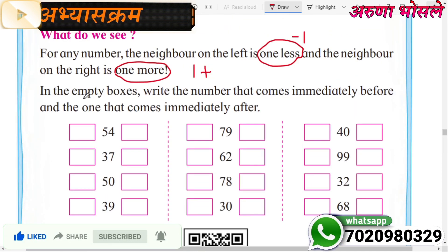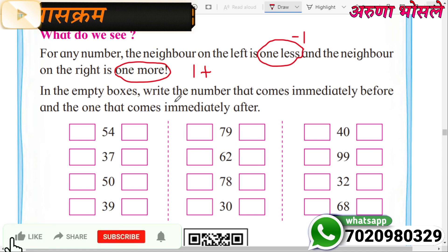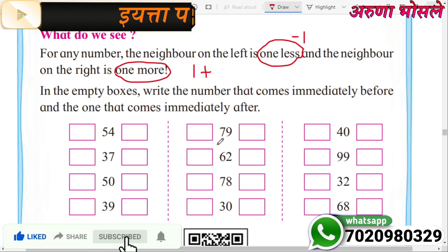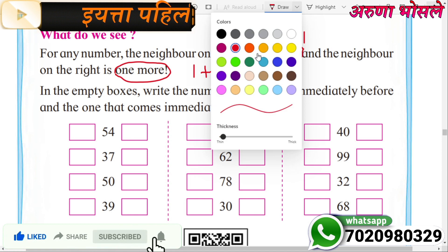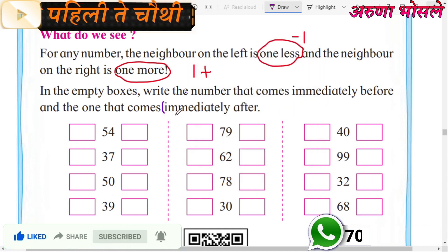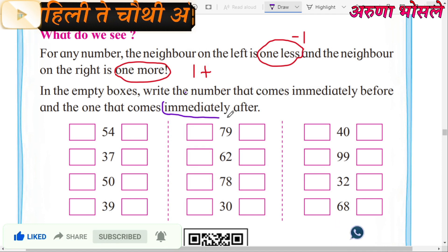In the empty boxes, write the number that comes immediately before and the one that comes immediately after. Immediately — immediately means lagath.